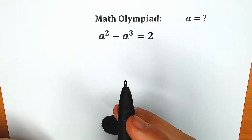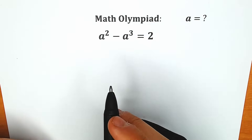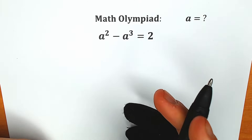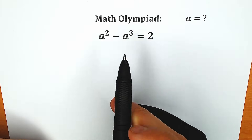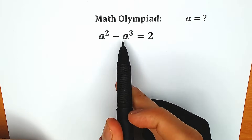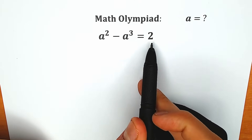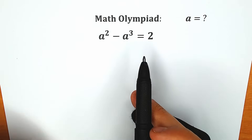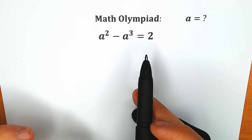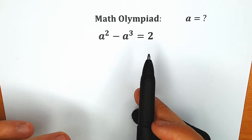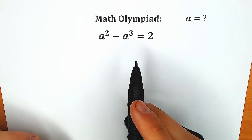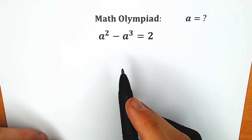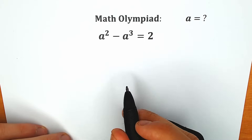Hello everyone, happy to see you here, welcome back to my channel Hire Mathematics. Today we have a very interesting equation: a squared minus a cubed equals 2. We need to solve this equation for a. If you have your solution, you can pause the video and try to solve this question on your own, and then we will check your answer.